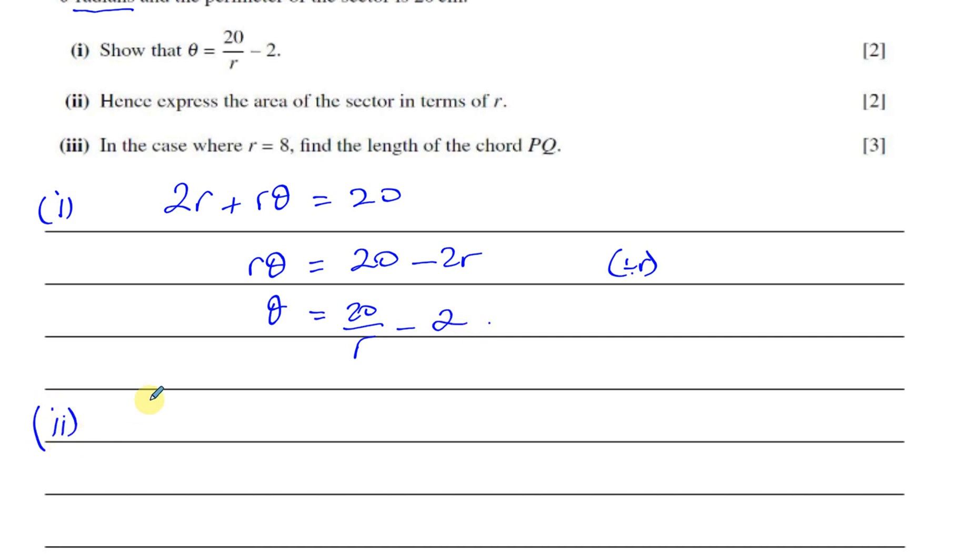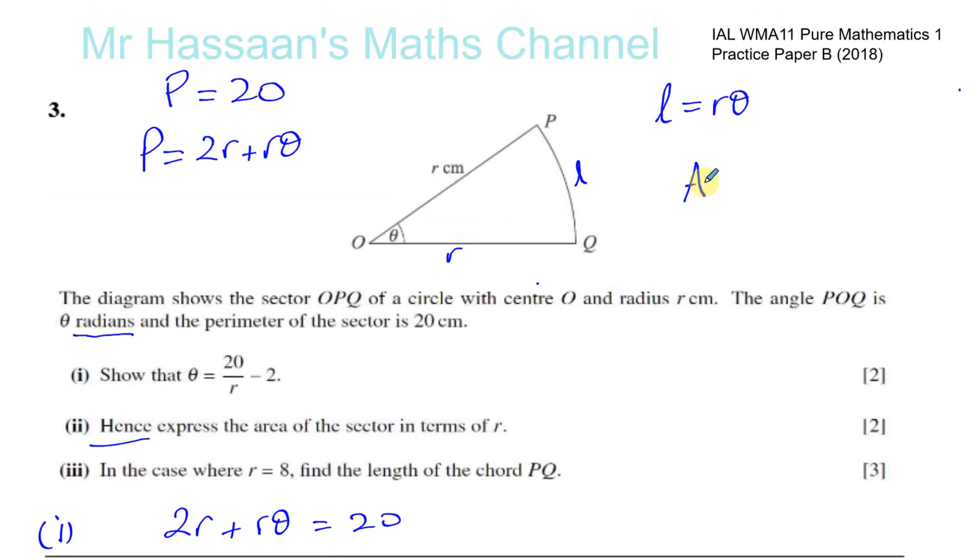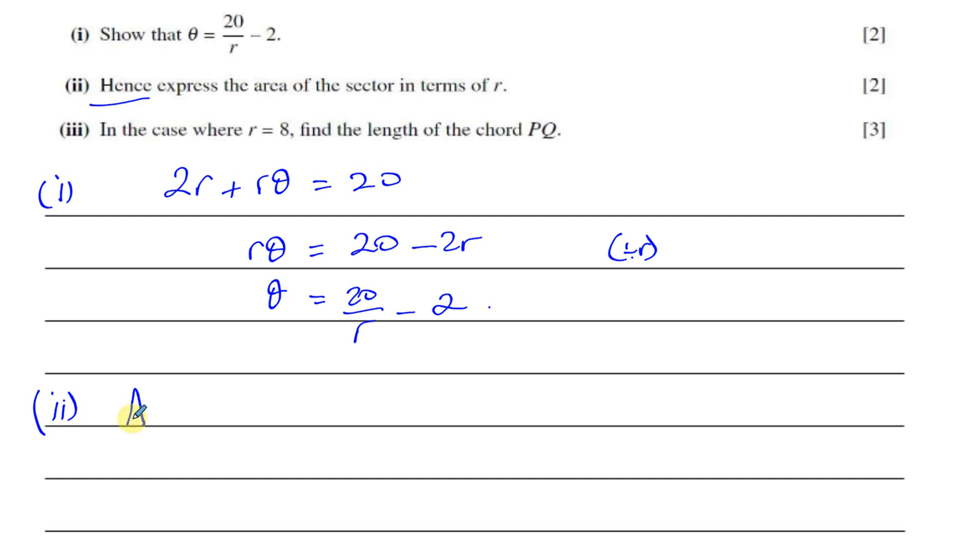Part 2. It says, hence express the area of the sector in terms of R. So it's saying using what you just found, express the area of the sector in terms of R. Now the area of a sector is given by the formula a half R squared theta when the angle is in radians which it is. So we can use the fact that the area is equal to a half R squared theta. And the fact that theta is equal to 20 over R minus 2. Hence means using what you've just done.